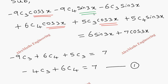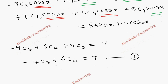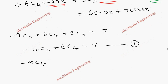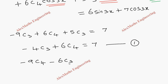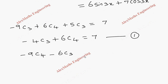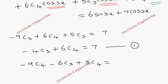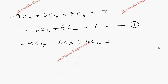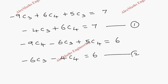Now collecting sin3x terms: the coefficients are −9C4, −6C3, and +5C4. Adding the C4 terms: −9C4 + 5C4 = −4C4. So we get −6C3 − 4C4 = 6. This is our second equation. We now solve for C3 and C4.